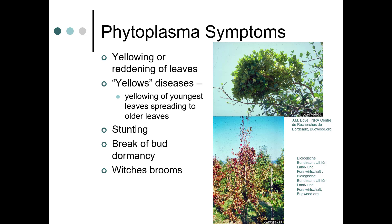Yellowing of youngest leaves spreads to older leaves. I'm going to be talking about aster yellows, but one real big problem on the east coast is ash yellows, and those trees are already under attack by emerald ash borer, so it's pretty devastating for ash trees. Other symptoms include stunting, break of bud dormancy, and witches' brooms, which you can see in the upper picture.